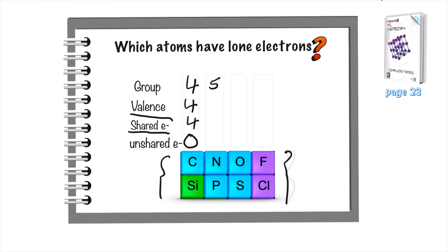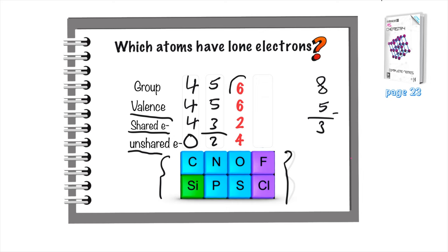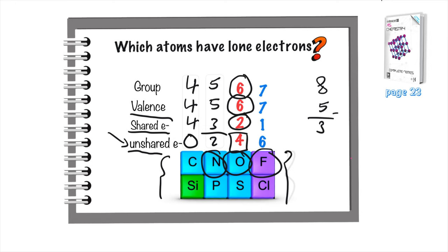For group five, the number of unshared electrons is five minus three, which is two. For group six: valence is six, shared electrons are eight minus six equals two, and unshared is six minus two equals four. So every time oxygen makes a covalent bond, it will have four unshared electrons. The same applies to group seven. The conclusion is that only group five, six, and seven atoms have lone electrons.